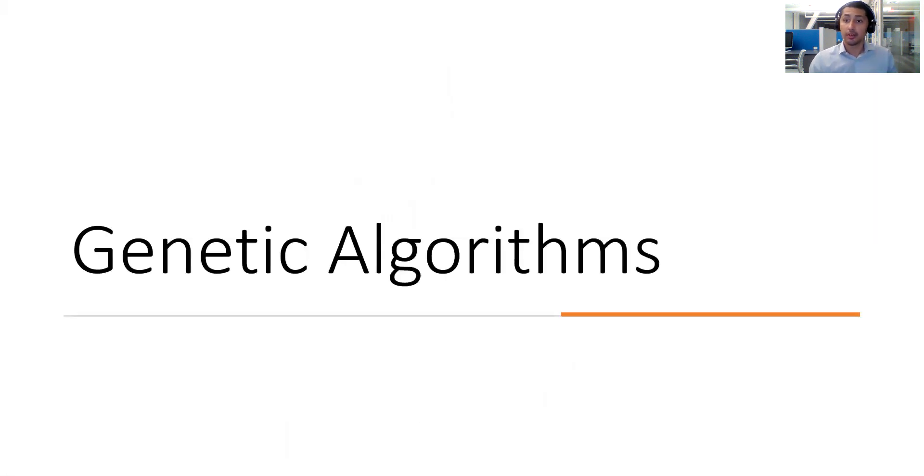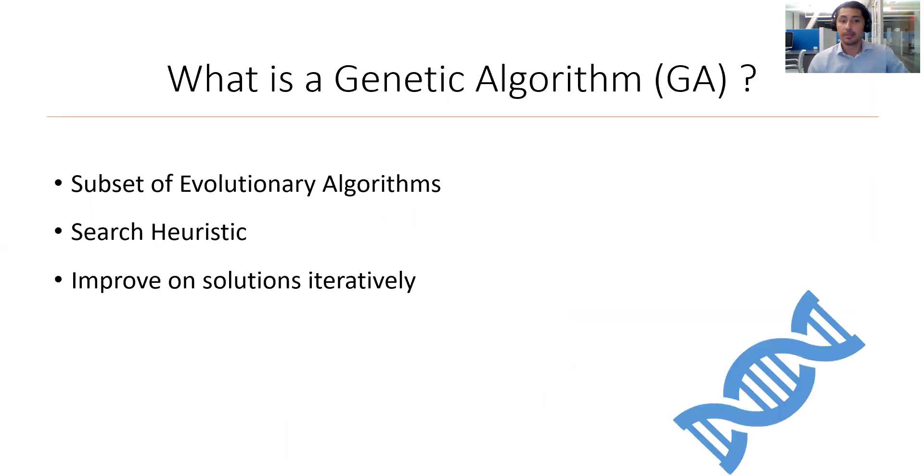One such method is the genetic algorithm. Genetic algorithms are a subclass of evolutionary algorithms often used to tackle problems like this. It is a search heuristic that incorporates notions of natural selection and evolution to search for solutions to problems and iteratively improve on them. In particular, it mimics a number of natural and genetic growth processes, being the selection, crossover, and mutation processes.